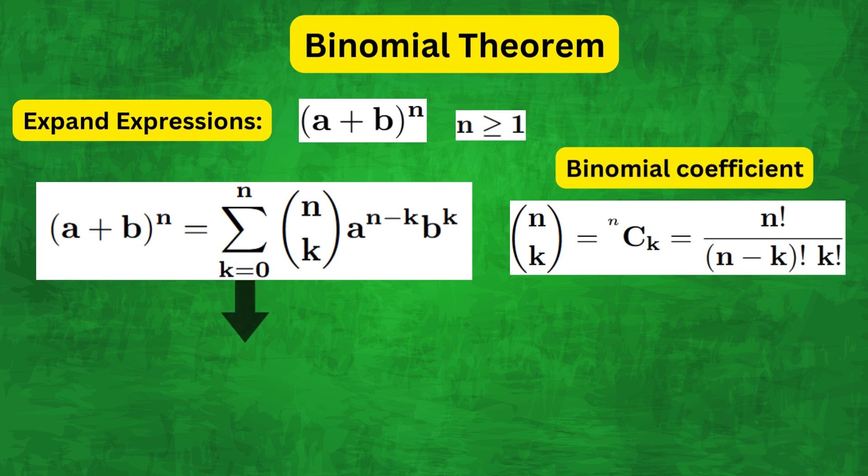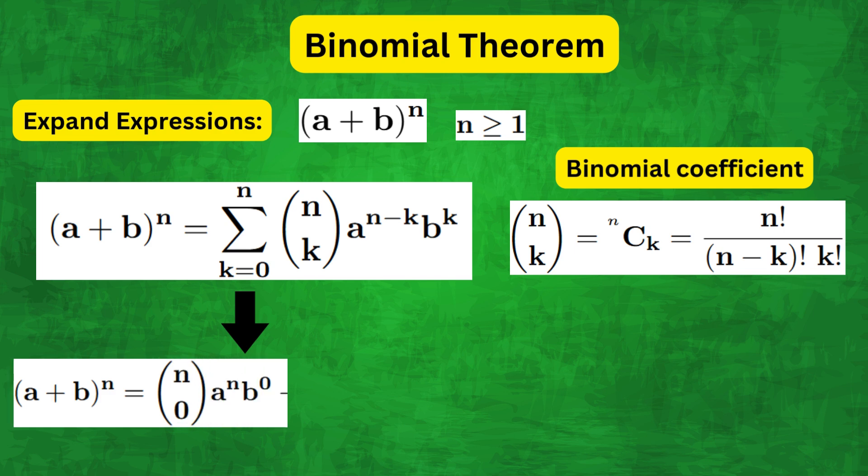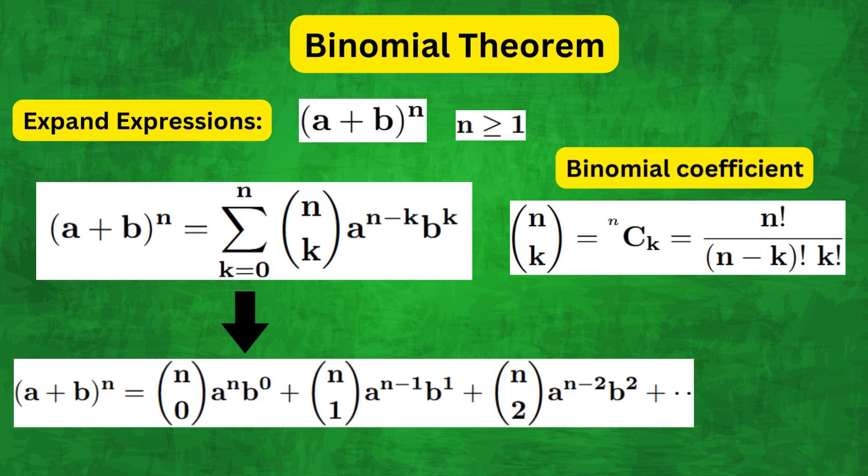Now if we expand out this summation we get a plus b to the power of n equals n combination 0, a to the power of n, b to the power of 0, plus n combination 1, a to the power of n minus 1 times b, all the way up to n combination n, a to the power of 0, b to the power of n.